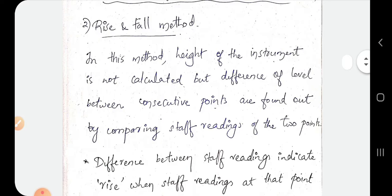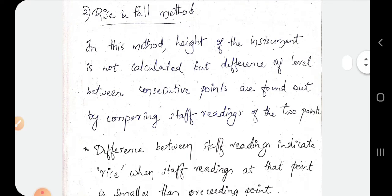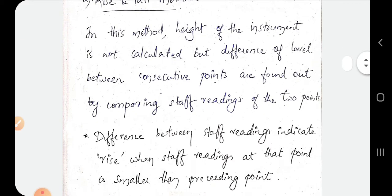In this method, the height of the instrument is not calculated, but the difference of level between consecutive points are found out by comparing the staff readings of two points.